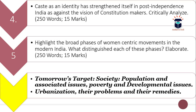The fifth question is: 'Highlight the broad phases of women-centric movements in modern India. What distinguished each of these phases? Elaborate.' You have to highlight what the broad phases associated with women-centric movements were and what factor distinguished each phase. Word limit is 250 and maximum marks are 15.